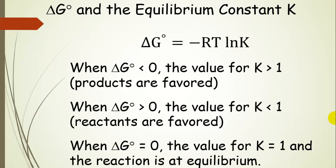It's important to get a sense for the value of the equilibrium constant based on the sign of the free energy. When the free energy is negative — less than zero — then the value for the equilibrium constant is going to be greater than one. You can try that yourself on your calculator by putting in a negative delta G and solving for K. That means products are favored: the equilibrium constant is products over reactants, and if the products term is larger, K will be greater than one.